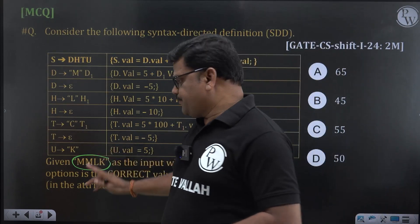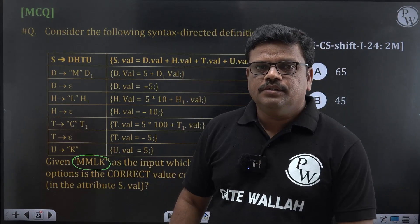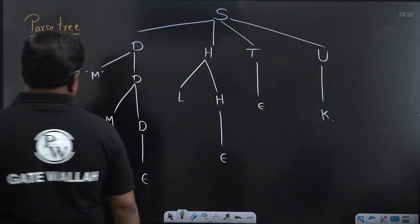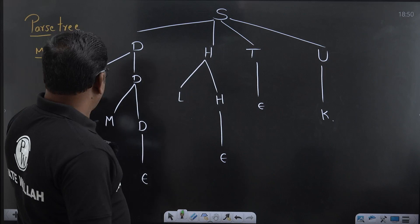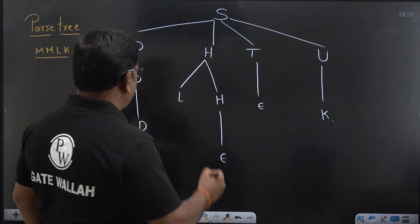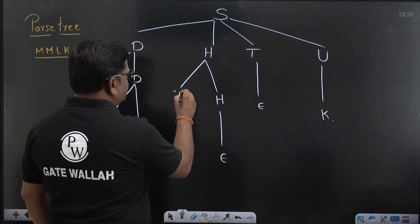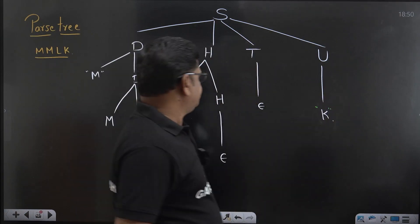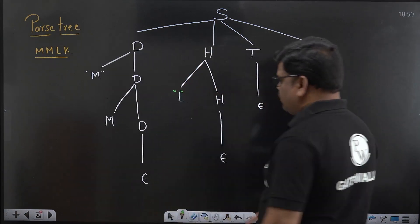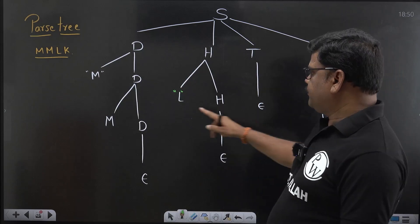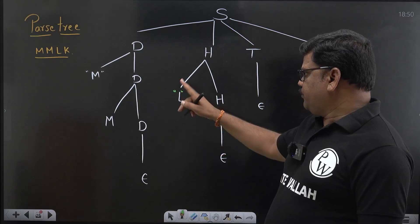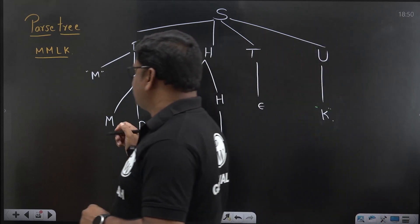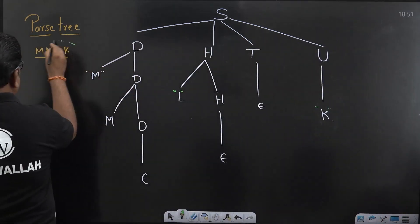For this input we need to construct a parse tree. For MMLK, the parse tree looks like this. All the remaining things are epsilon (ε) leaf nodes. The leaf nodes, if you read them, give us MMLK as the input. So this is the parse tree for the input MMLK.